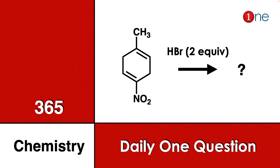Welcome to One Chemistry. This is the 365 Chemistry Series — one daily question for you. Here, cyclohexadiene is given with an attached methylene nitro group. You are using two equivalents of HBr. You have to find what will be the major product.